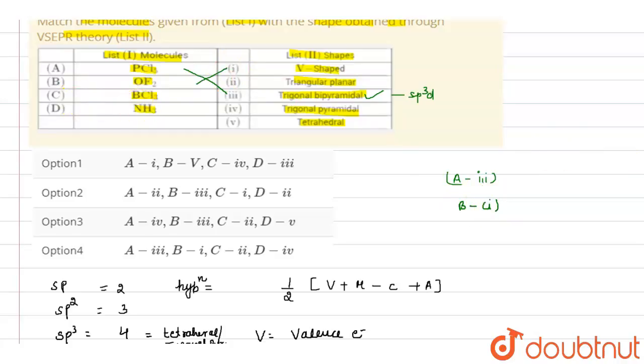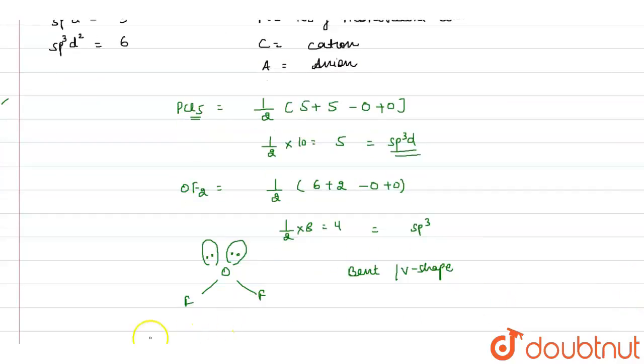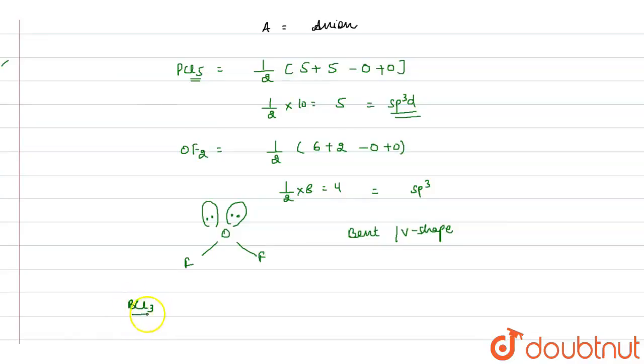Next, moving on to BCL3. In case of BCL3, boron has 3 valence electrons plus 3 monovalent chlorine are there.